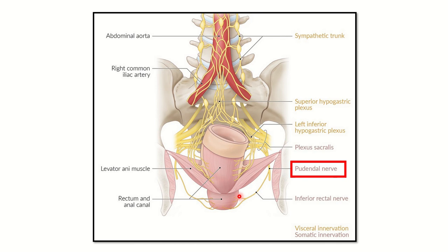Here we can see the anal canal and external anal sphincter supplied by a nerve on both sides. This is the inferior rectal nerve, which is derived from the pudendal nerve. We can see the pudendal nerve arising from the sacral region, so we need to find out which sacral nerve roots form the pudendal nerve.